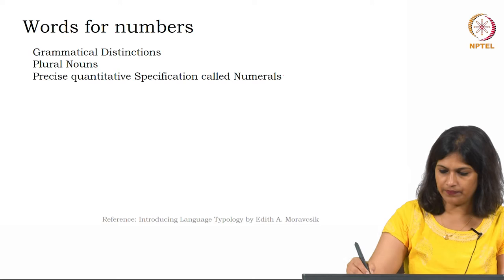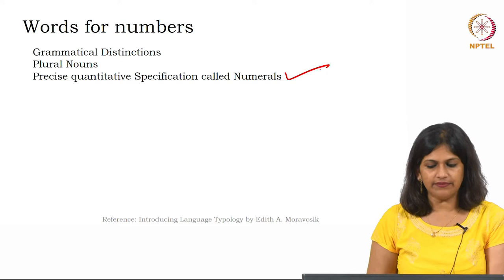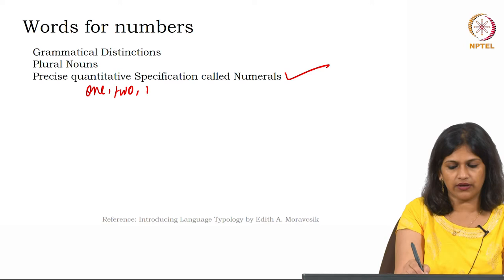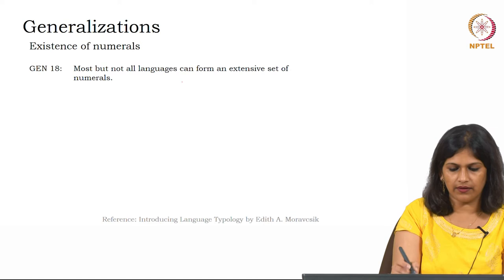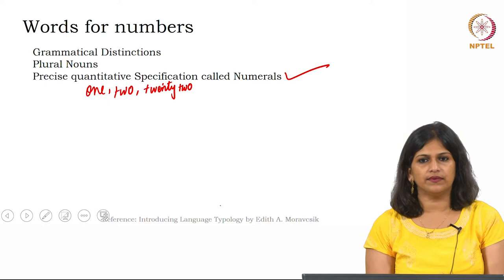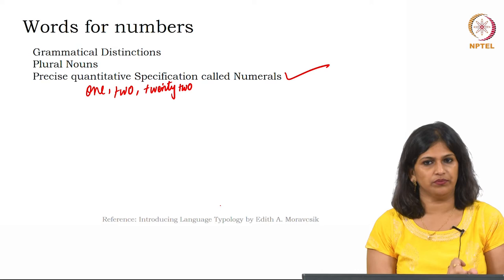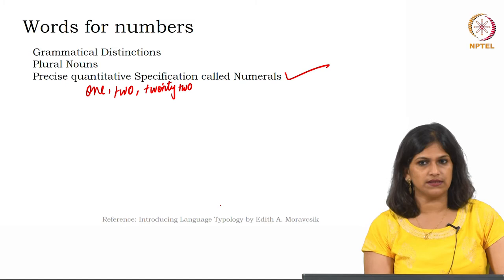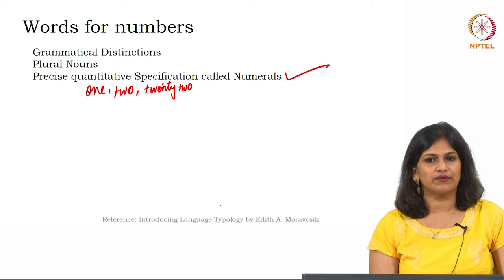You need to remember this term: numerals are precise quantitative specifications. Things like 1, 2, 33, 34, 500, 10,000 — all of these are examples of numerals. Now we are going to look at how these words resemble and differ from each other.